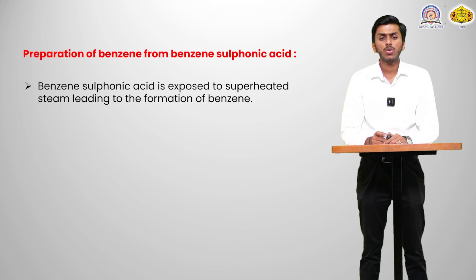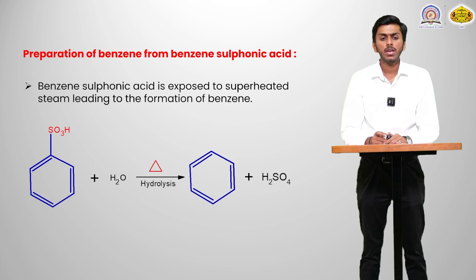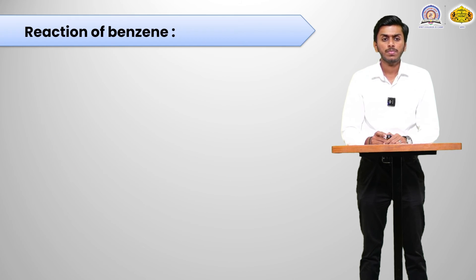Preparation of benzene from benzene sulfonic acid: benzene sulfonic acid is exposed to superheated steam, leading to the formation of benzene. The benzene sulfonic acid on hydrolysis gives benzene and H2SO4 as products.